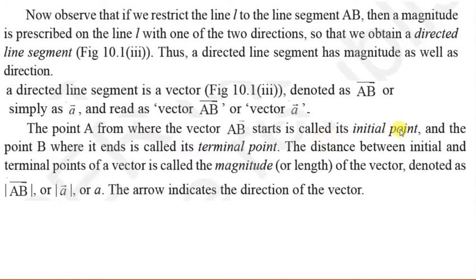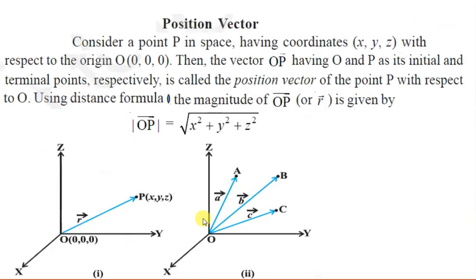The point A from where the vector AB starts is called the initial point, and the point B where it ends is called the terminal point. The distance between initial and terminal points of a vector is called the magnitude or length of the vector. The arrow indicates the direction of the vector.